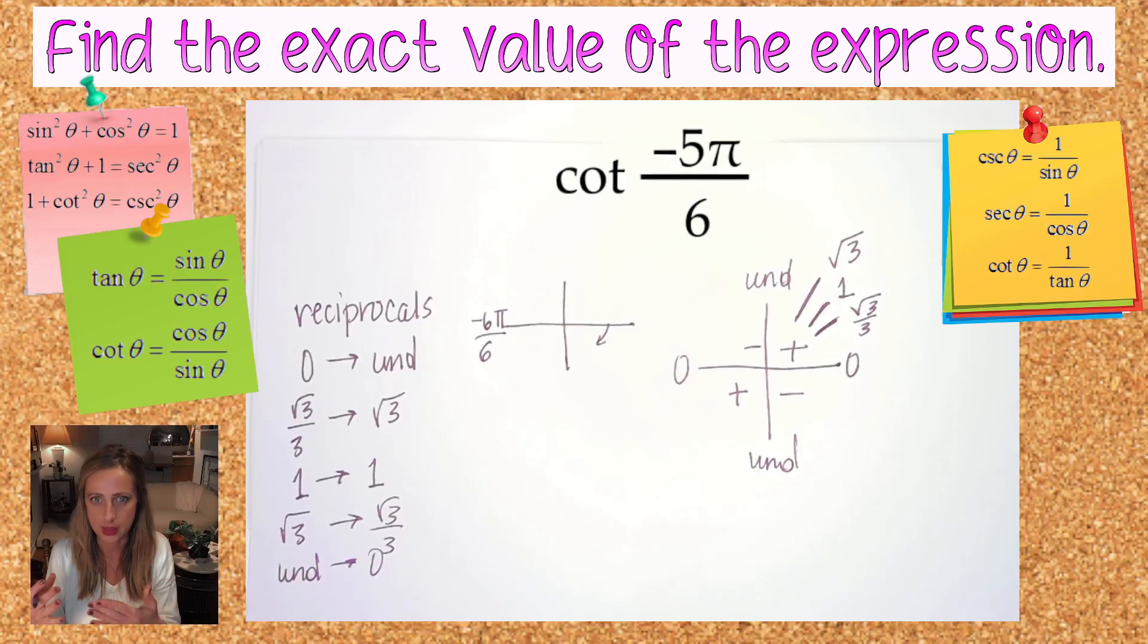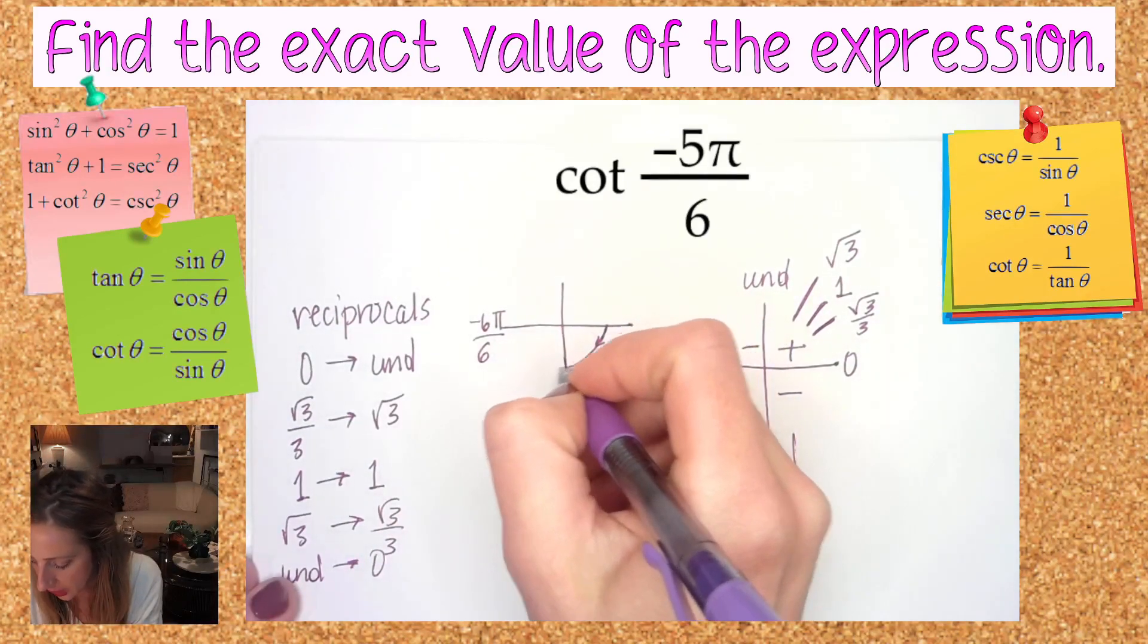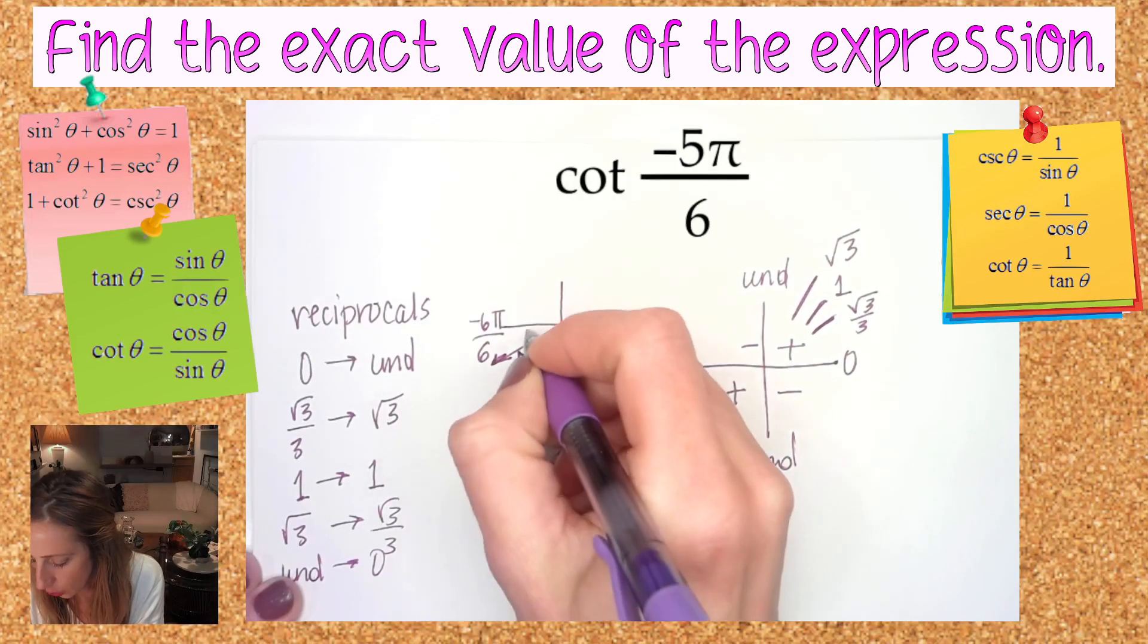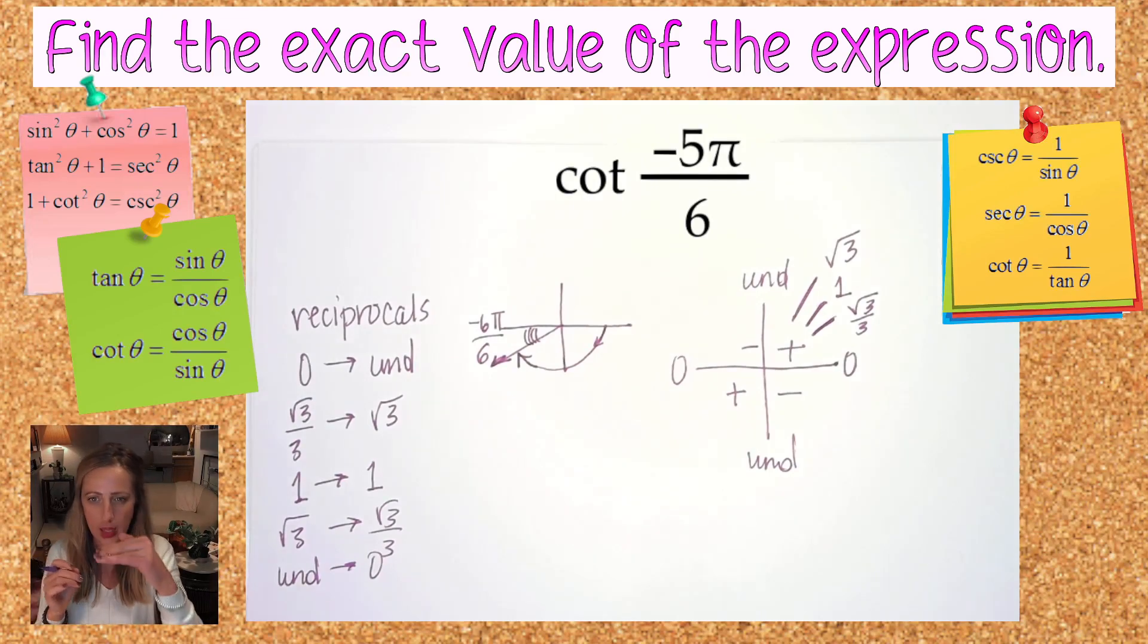So where does that get me? Right about here. One π over 6 away from 6π over 6, I am at the angle that is closest to the x-axis in regards to unit circle angles. My answer is going to be positive here.